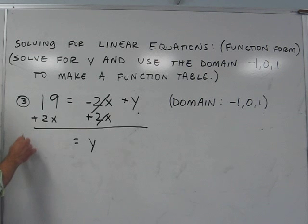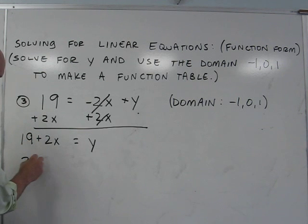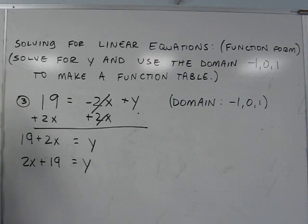On the left side, we have 19 plus 2x, or 2x plus 19 is equal to y. We are now in the form y equals a times x plus b.